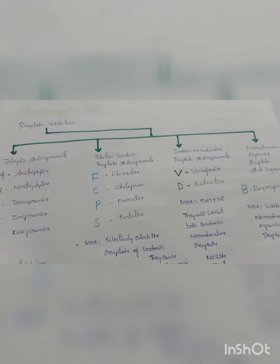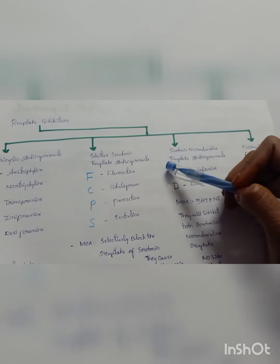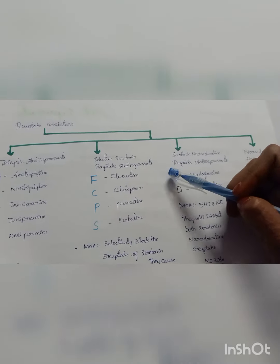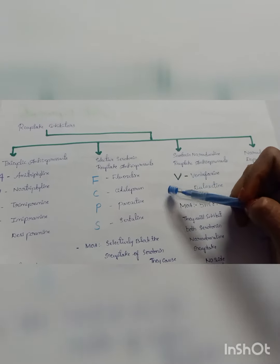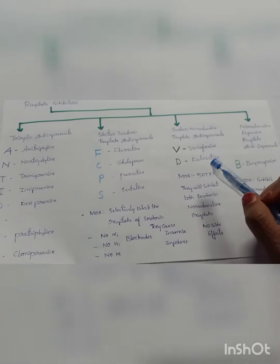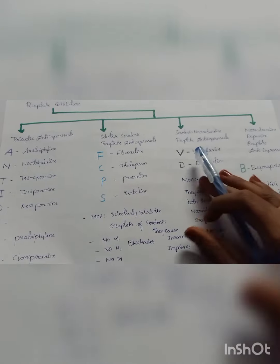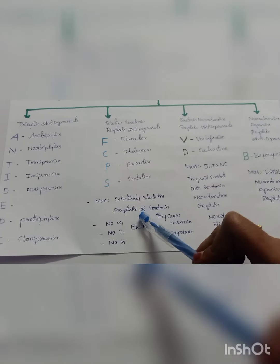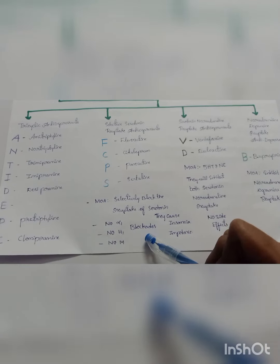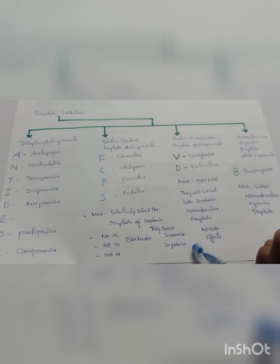Moving to the selective serotonin reuptake antidepressants — we can remember the drugs with the mnemonic FCPS: F stands for fluoxetine, C stands for citalopram, P stands for paroxetine, S stands for sertraline. The mechanism of action: they selectively block the reuptake of serotonin. There is no blockade of alpha-1, H1, or muscarinic receptors. They cause insomnia and impotence.